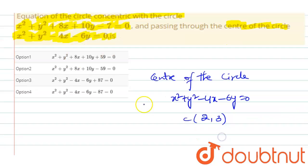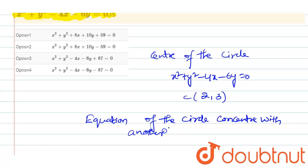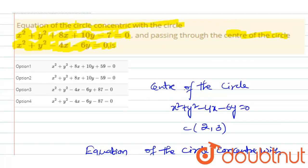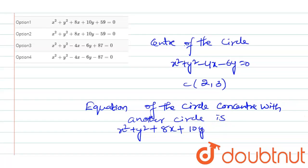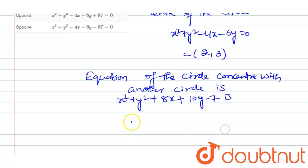The equation of the circle concentric with another circle x square plus y square plus 8x plus 10y minus 7 is x square plus y square plus 8x plus 10y plus c.